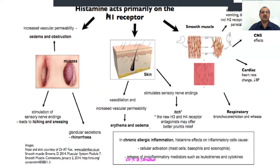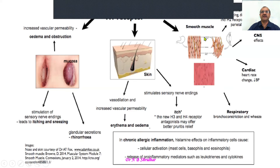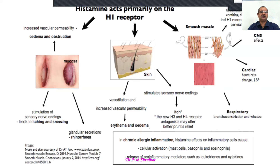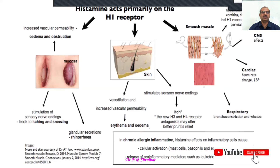Apart from this, on the smooth muscles there will be vomiting and diarrhea mediated centrally. Histamine causes constriction of the respiratory tract — bronchoconstriction and wheezing will be seen. Allergy-induced asthma or allergic respiratory problems will usually respond to antihistamines.